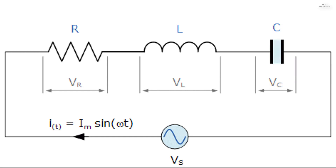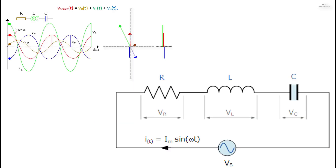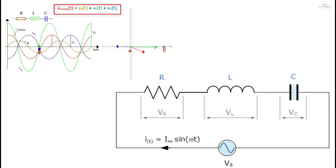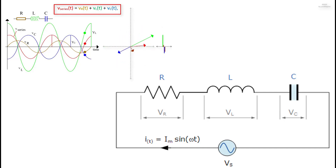The instantaneous voltage across a pure resistor VR is in phase with the current. The instantaneous voltage across a pure inductor VL leads the current by 90°. The instantaneous voltage across a pure capacitor VC lags the current by 90°. Therefore VL and VC are 180° out of phase and in opposition to each other.